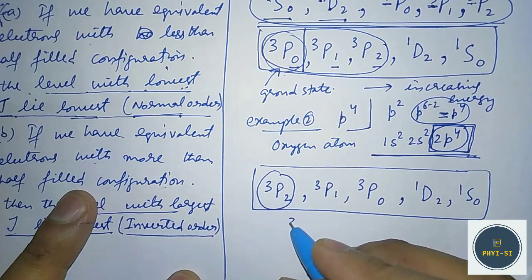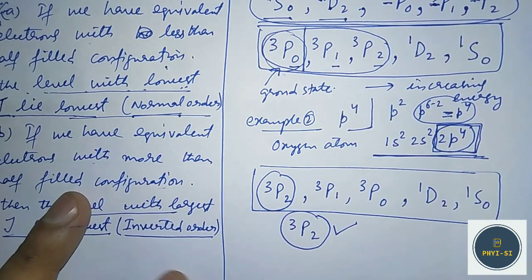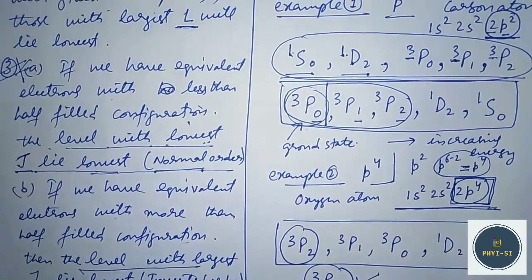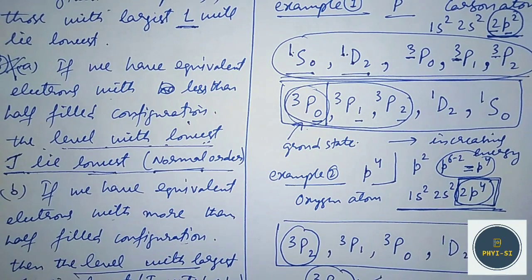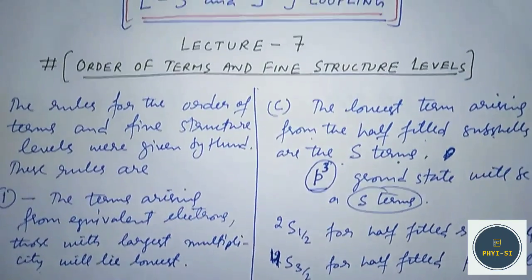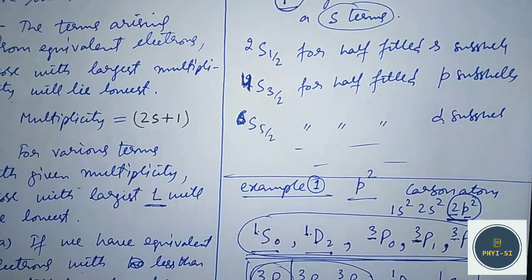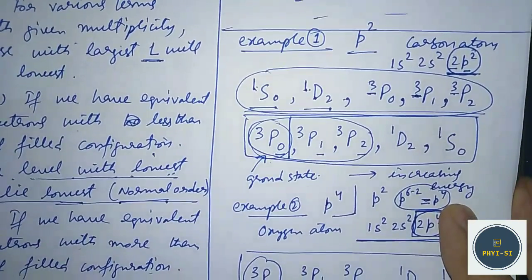So I hope you understand all these rules and can apply them to further problems. When you want to find the fine structure levels and their order, you can do so by applying these three Hund's rules. I hope you enjoyed the lecture. Thank you, see you in the next lecture. Goodbye.